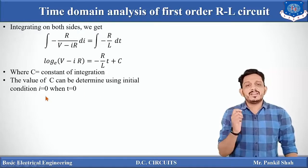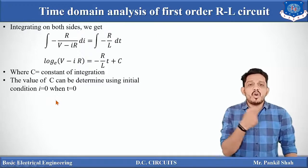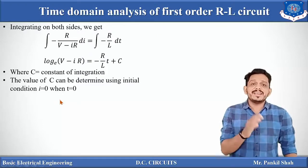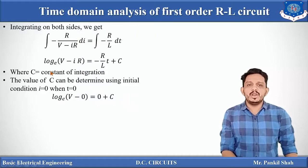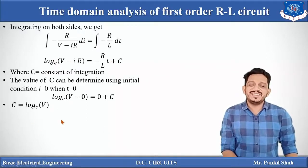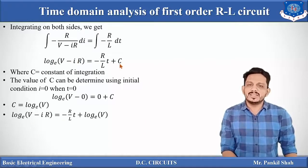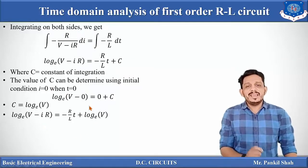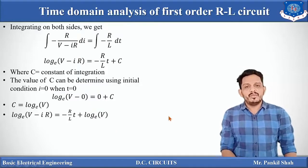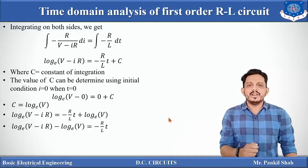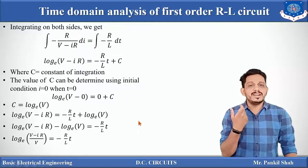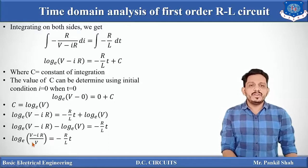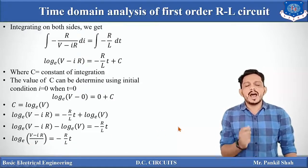To find c, we use the initial condition: at time t = 0, current i = 0, since the inductor has not yet allowed any current through it. Substituting into the equation gives log V = 0 + c, so c = log V. Substituting back: log(V − IR) = −(R/L)t + log V. Bringing both log terms to one side: log(V − IR) − log V = −(R/L)t, which gives log[(V − IR)/V] = −(R/L)t.